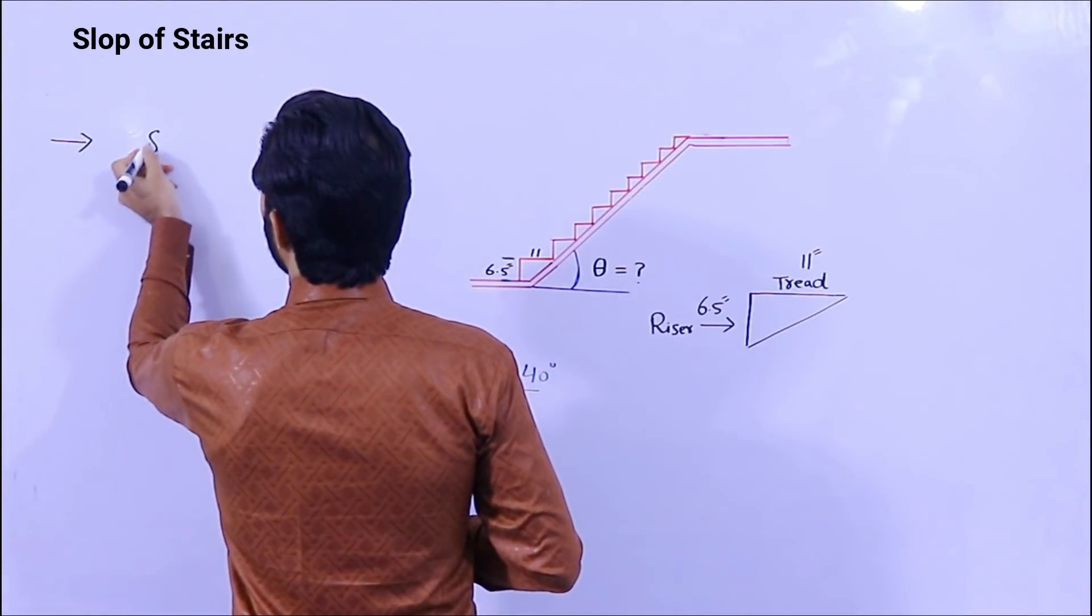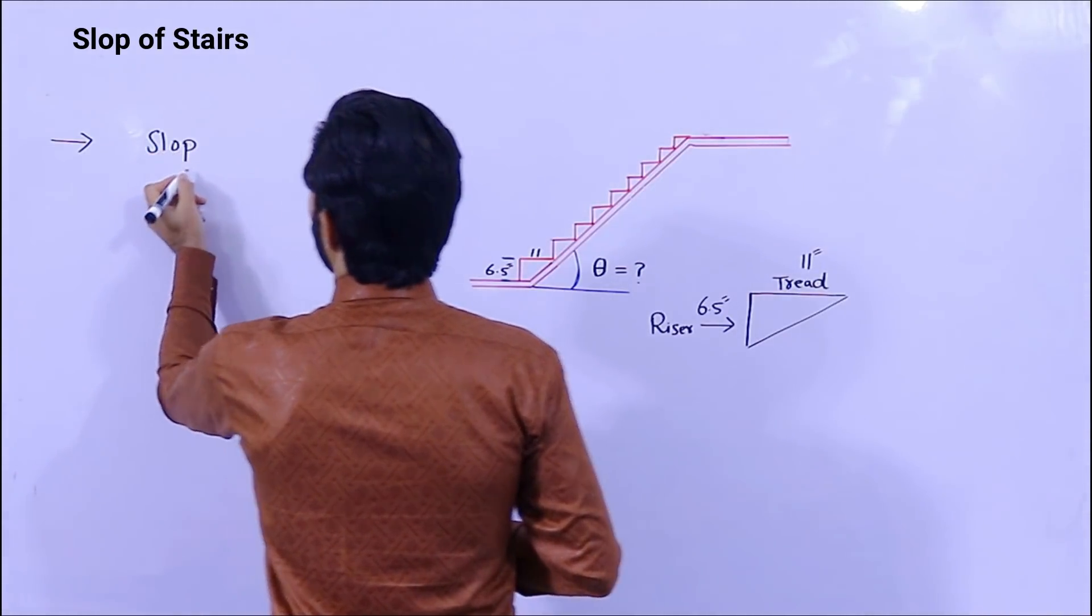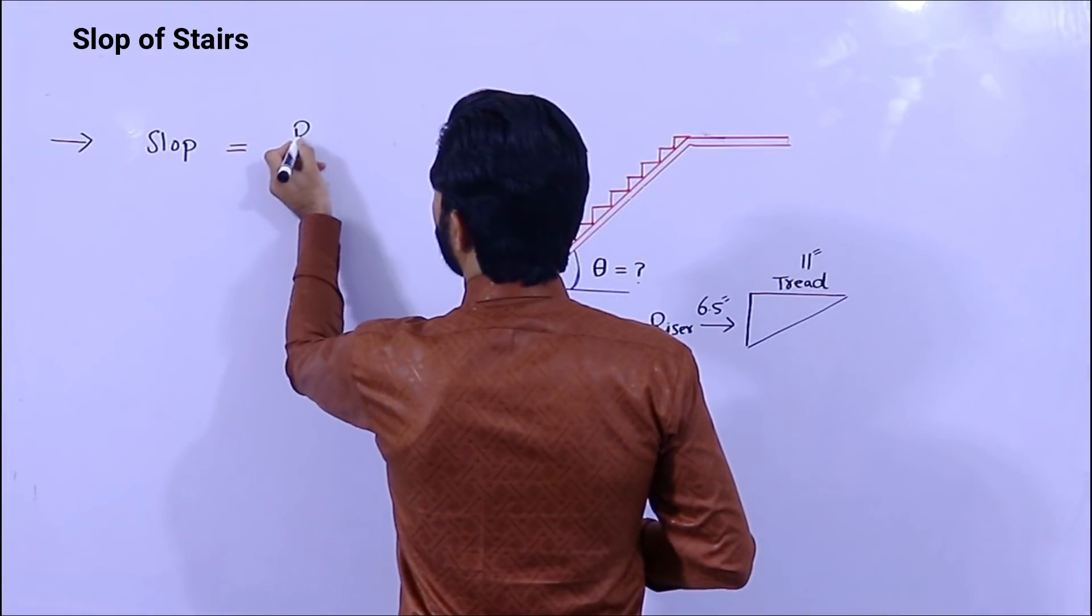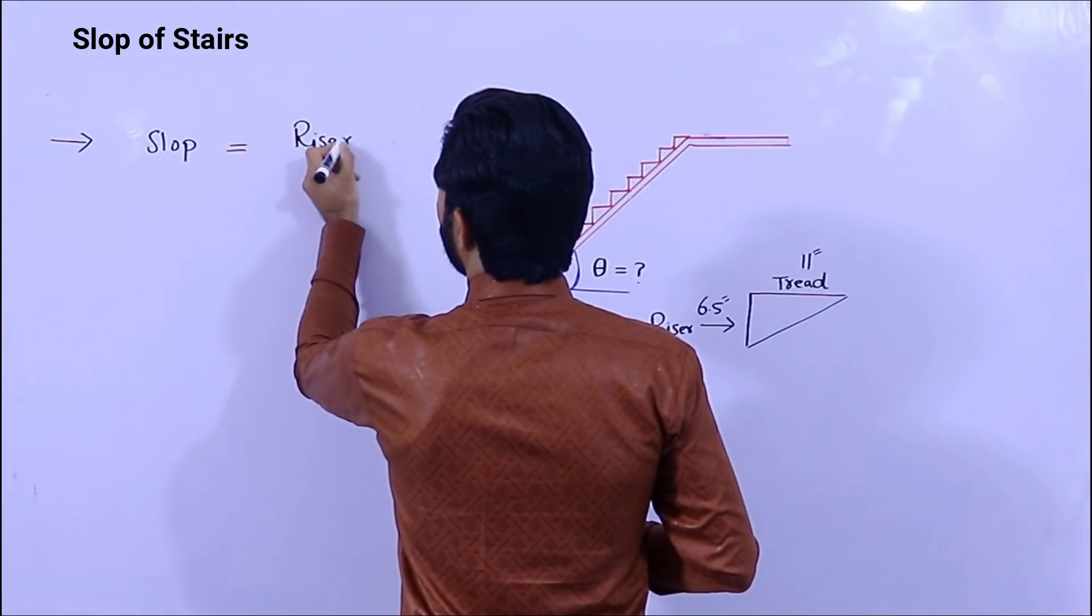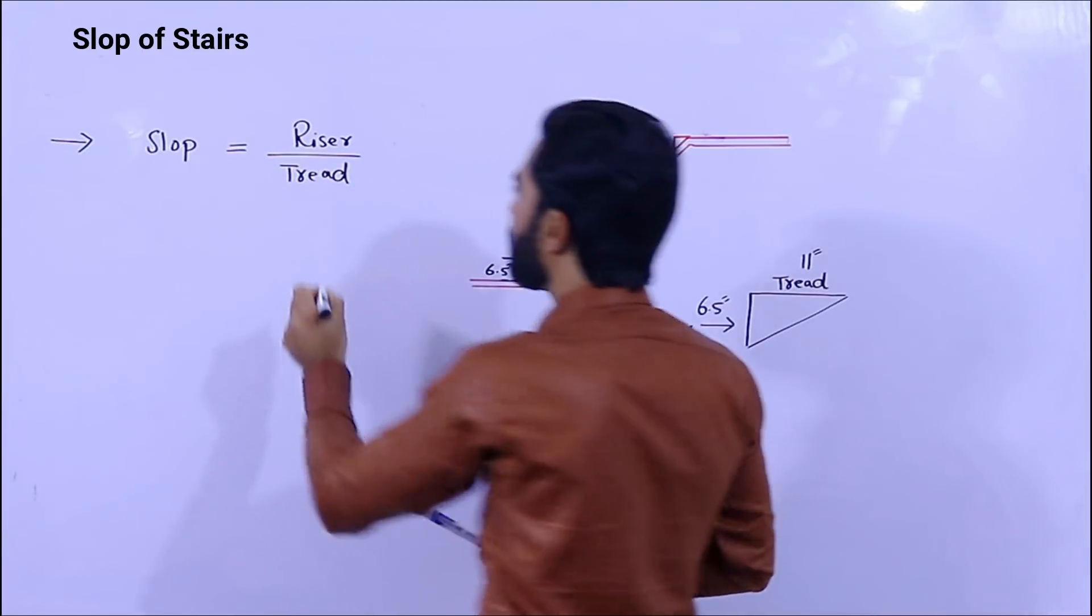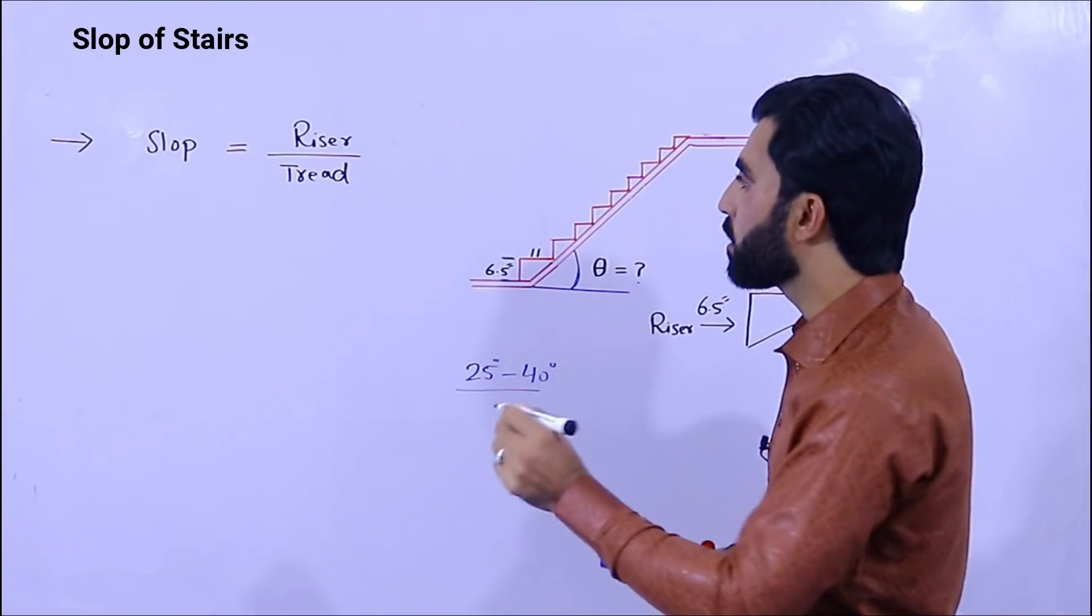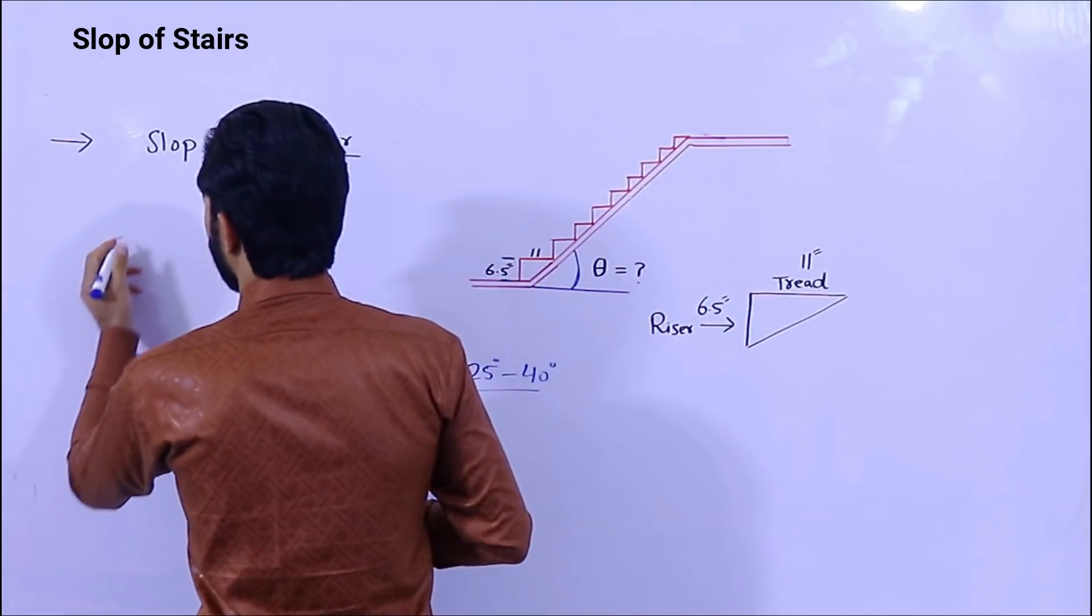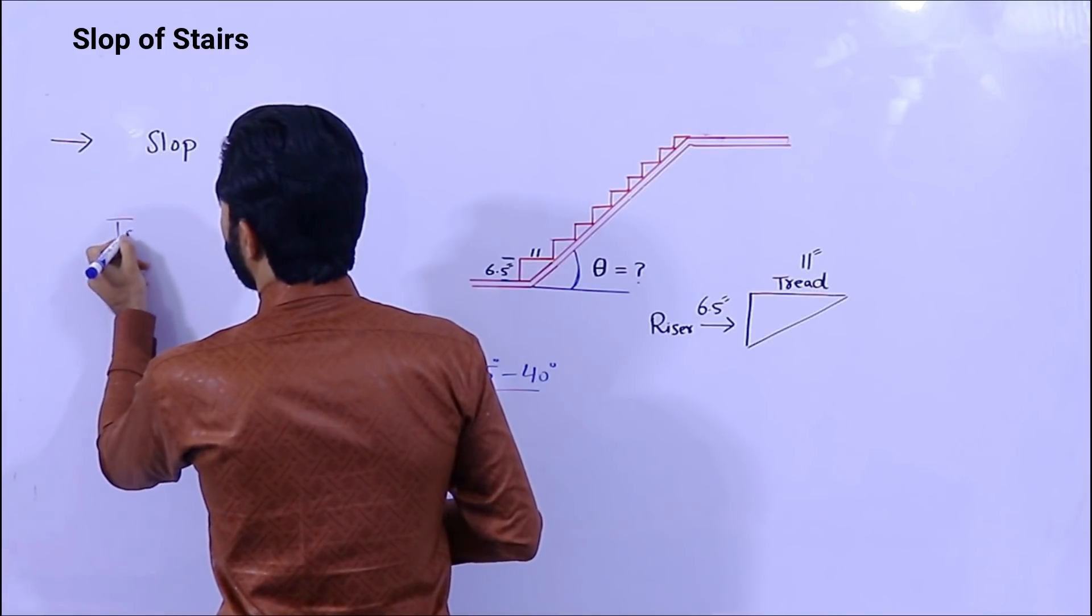The slope, we can find with the formula of riser divided by tread. Riser divided by tread. So if you see guys, the slope is what? Tangent theta.